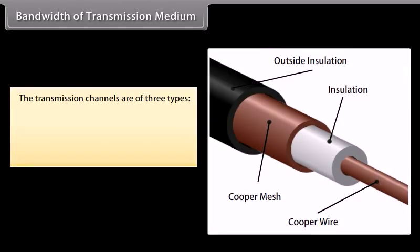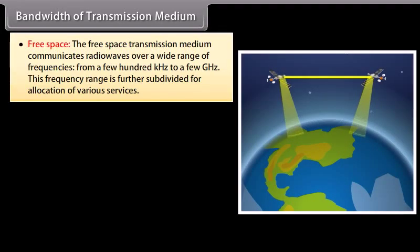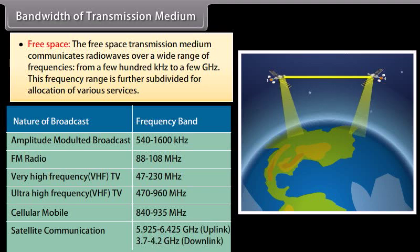The transmission channels are of three types. Wires: the widely used wire medium is a coaxial cable. The bandwidth of coaxial cables is about 750 MHz; such cables are usually operated below 18 GHz. Free space: the free space transmission medium communicates radio waves over a wide range of frequencies, from a few hundred kilohertz to a few gigahertz.